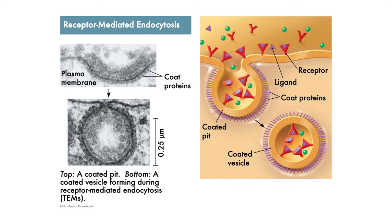But the fish are small and delicious, so he doesn't want to waste energy pulling in empty traps for these tiny delicacies. The coat proteins function like flags that are flipped upwards when a trap catches a fish. The fisherman will wait until enough flags are flipped to make it worth his while to haul in the catch, and the coated vesicle is a rich trove of delicious little fish.